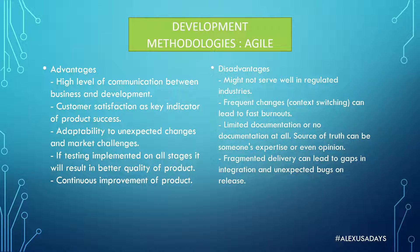Without documentation, you wouldn't have somewhere to go and actually read about the product or feature — how it should work or what's already implemented. You'd have to talk to people to figure things out, and that's not always the best approach. Fragmented delivery can also lead to gaps in integration and unexpected bugs on release. For example, if the front-end team says their tickets are done and the back-end team says their tickets are done, but when they bring it together there's a mismatch in API calls — things just aren't working. Integration has to be tested well.